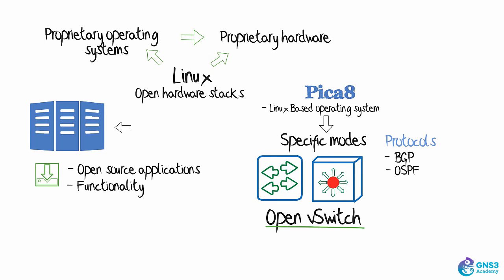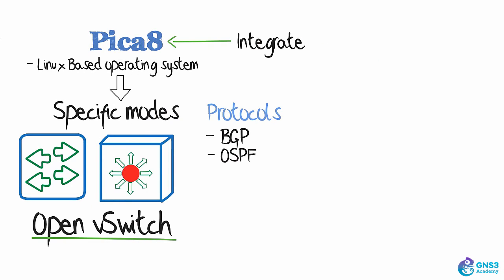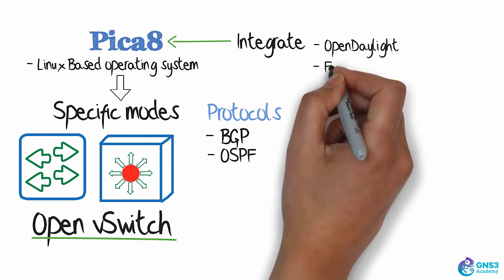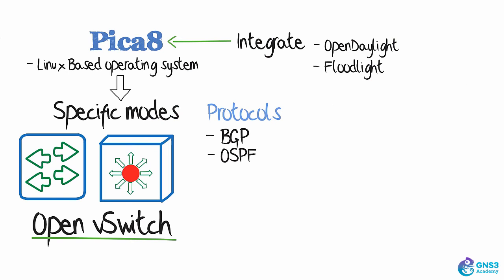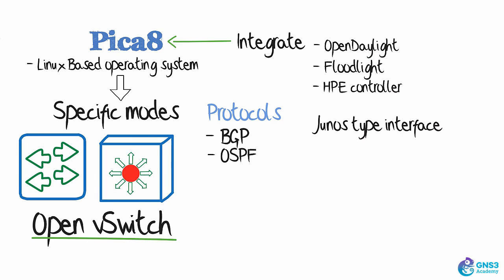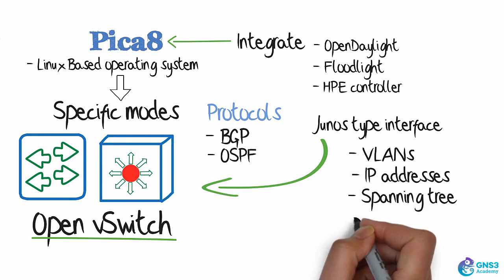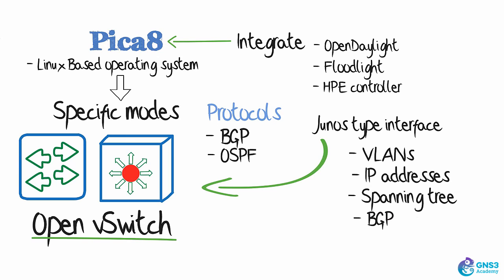In this course I'm going to show you how to integrate Pika 8 switches with controllers such as OpenDaylight, Floodlight, and the HPE controller. I'll also show you how you can use a Junos-type interface to configure layer 2, layer 3 functionality such as VLANs, IP addresses, Spanning Tree, and BGP on Pika 8 switches.